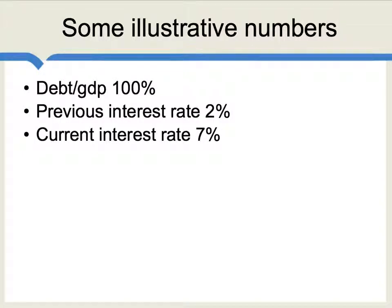Let's consider a simple numerical example with some easy-to-use numbers. We're going to have a debt-to-GDP ratio of exactly 100%. Imagine that the previous borrowing interest rate was about 2%, which was often the case — or maybe even lower — during the last decade in the Eurozone. And then let's consider that the current interest rate has gone up to 7%. This has happened in many countries; in Ireland for a while, borrowing rates were well into double digits.